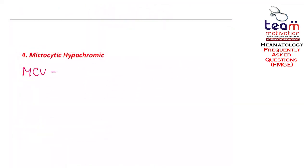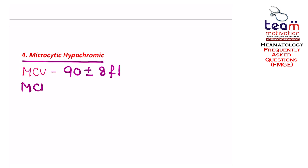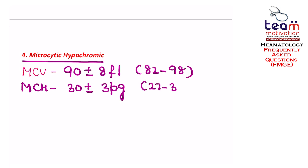Question number 4 was a microcytic hypochromic picture. Normal MCV is 90 ± 8 femtoliters (range 82–98) and normal MCH is 30 ± 3 picograms (range 27–33). Microcytic means MCV is less than 82, and hypochromic means MCH is less than 27.